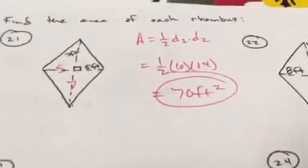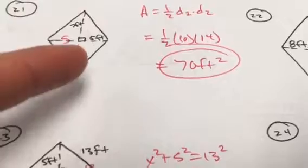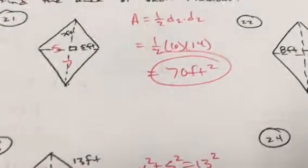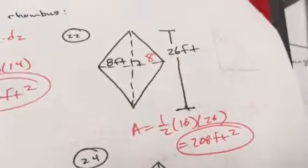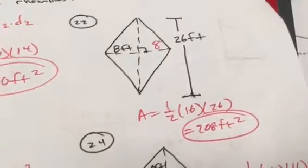You're going to on the rhombus and the kite have the same formula. It's ½ diagonal 1 times diagonal 2. And a rhombus, diagonals bisect each other. So if that is 7, that's 7. If that's 5, that's 5. One diagonal is 14. The other is 10. Multiply and divide by 2. 26 is the entire diagonal. If one side is 8, one part is 8. The other part is 8 as well. So the whole diagonal is 16.